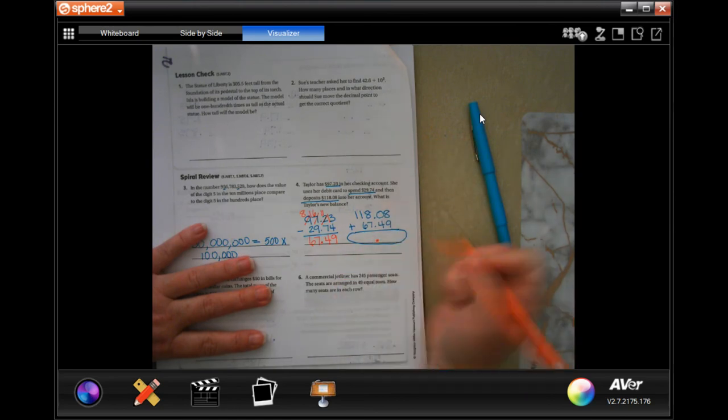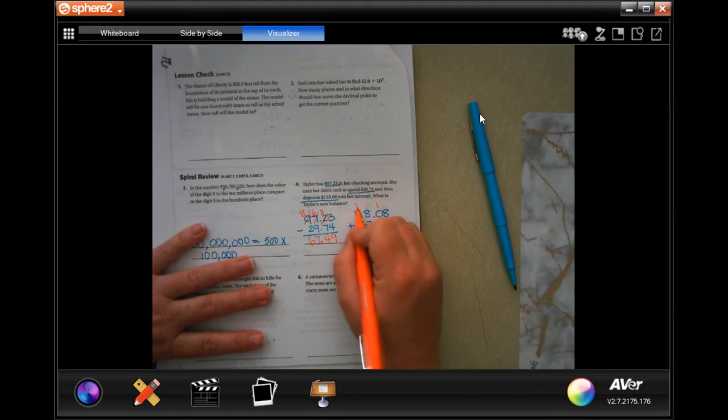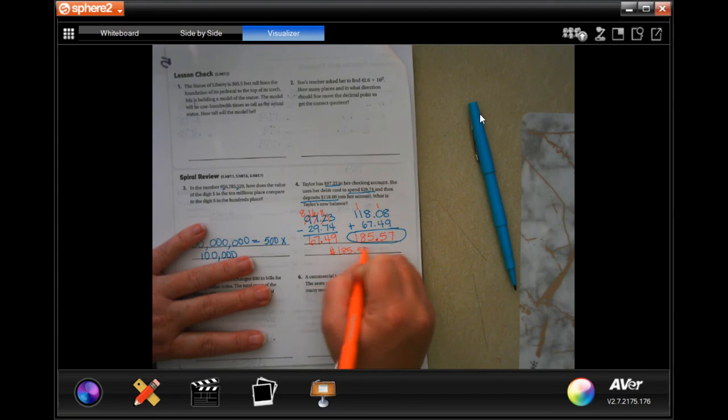Then, I'm going to add those up. Again, dropping my decimal first. Eight plus nine is 17. Carry the one. One plus four is five. Eight plus seven is 15. Carry the one. One plus one is two, plus six is eight, and bring down my one. So, my answer is $185.57.